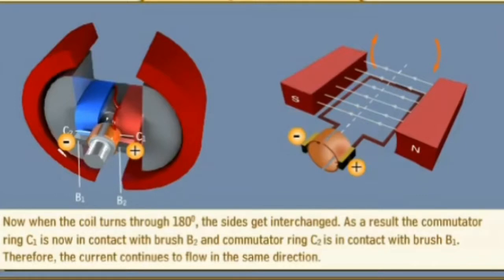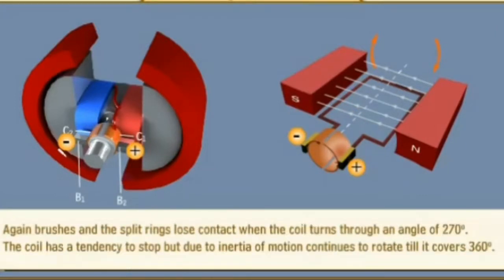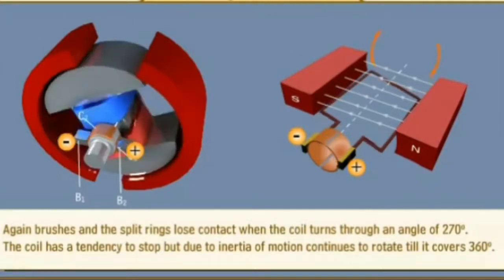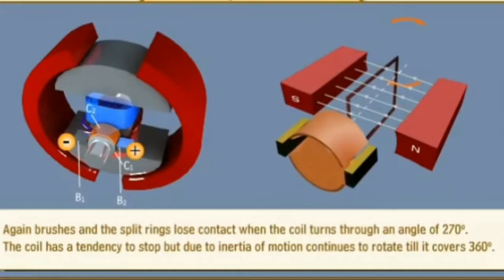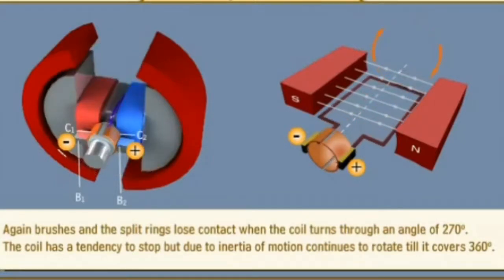Therefore, the current continues to flow in the same direction. Again, brushes and the split rings lose contact when the coil turns through an angle of 270 degrees. The coil has a tendency to stop, but due to inertia of motion, continues to rotate till it covers 360 degrees. The process continues.